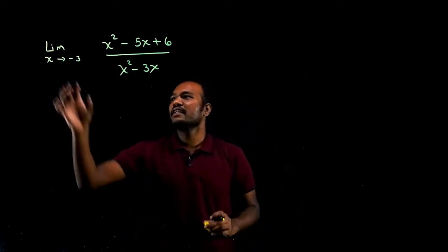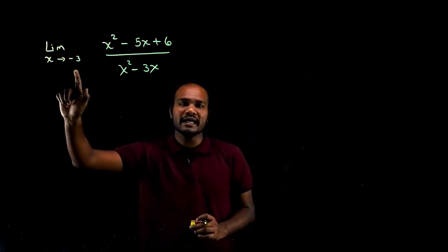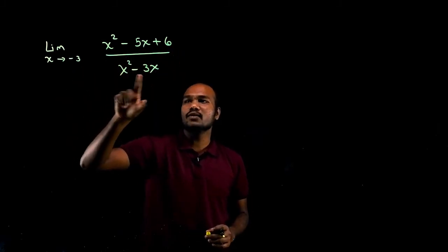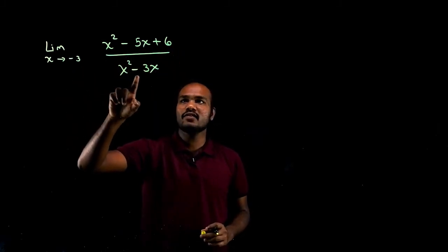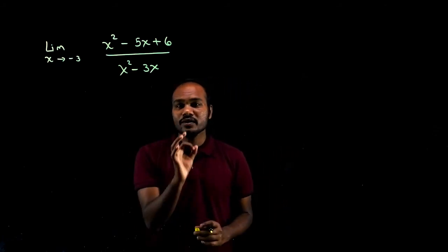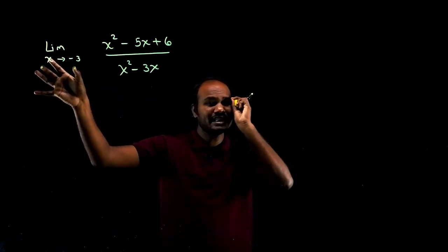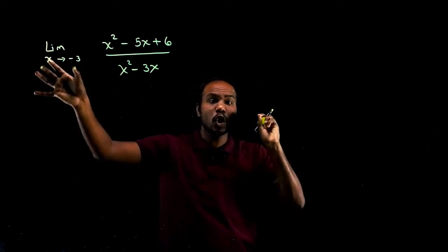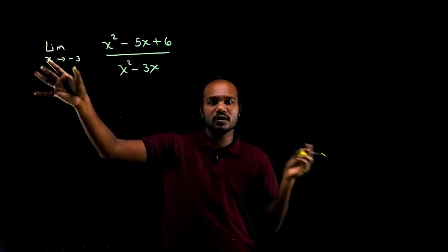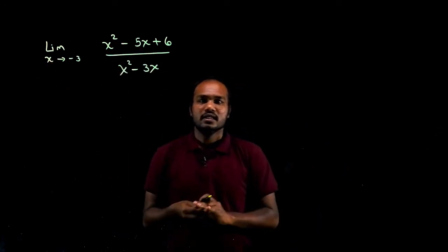What is given? We have the limit x tends to minus 3, x squared minus 5x plus 6 over x squared minus 3x. What we need to do — whenever you see the limit, what is the golden rule? The golden rule says: whenever you see the limit, substitute the limit.